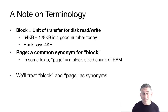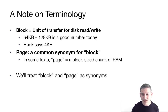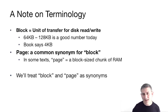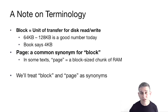A note on terminology: a block is the unit of transfer between a disk and RAM. It's usually configured to a constant when you set up your database system — typically 64K, sometimes 128K. The book for this course says 4K, but these days it would be more like 64K. The word 'page' is used interchangeably with block. In some textbooks, 'page' strictly refers to a block that's currently in memory, while 'block' refers to what's on disk. We'll use them interchangeably and try to make the context clear.